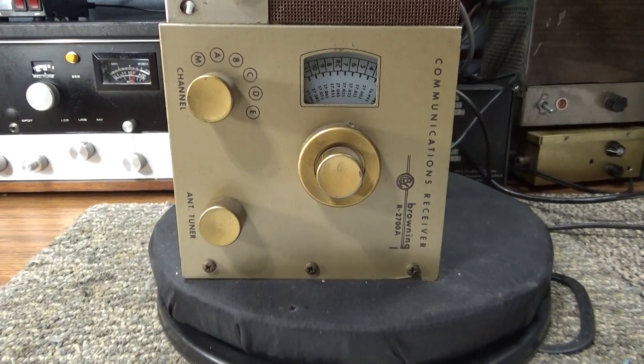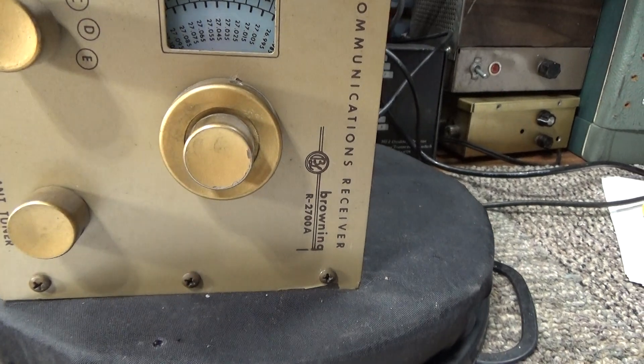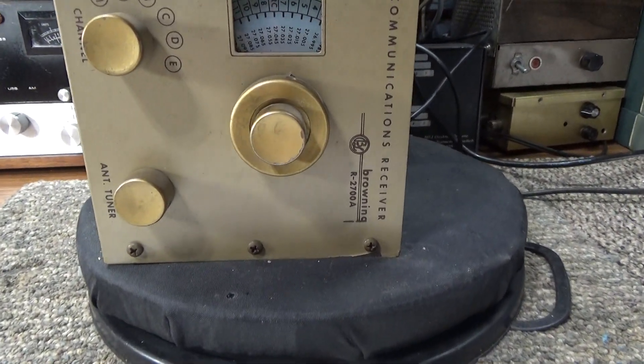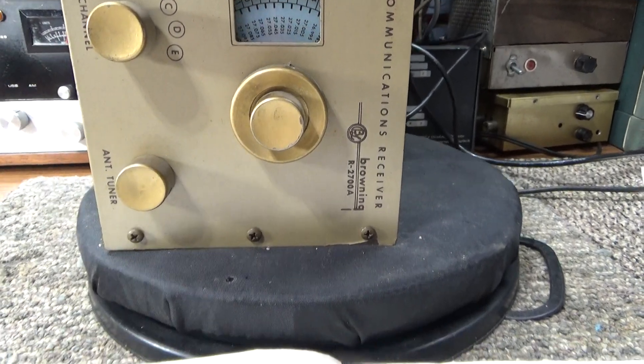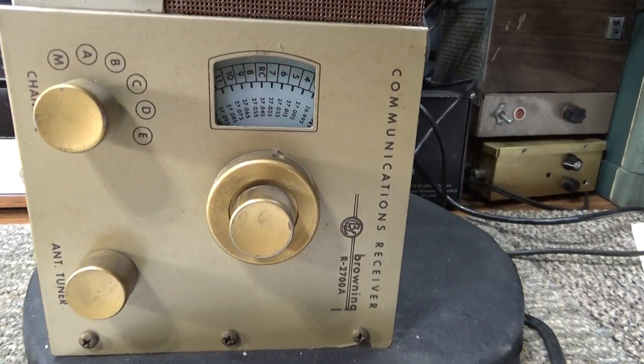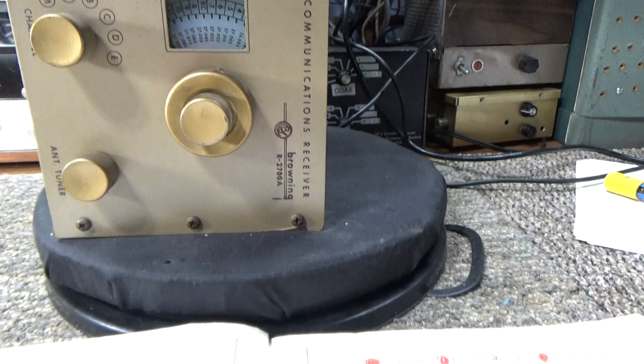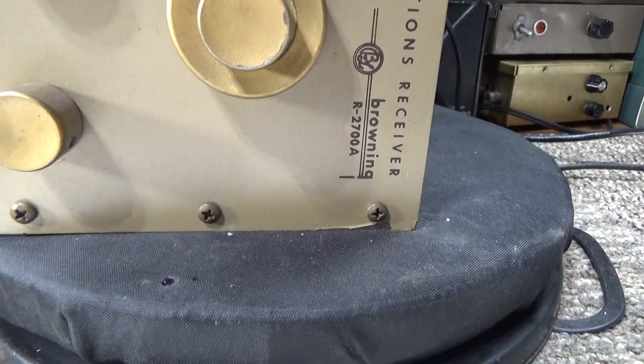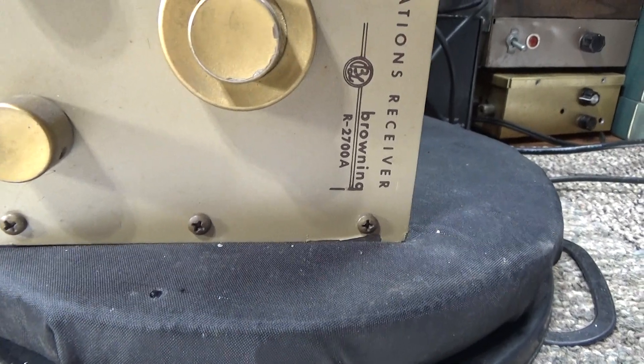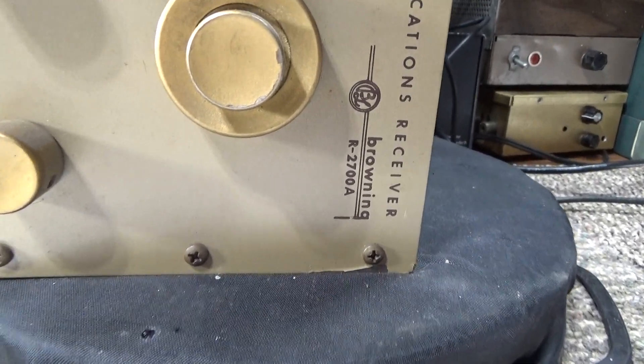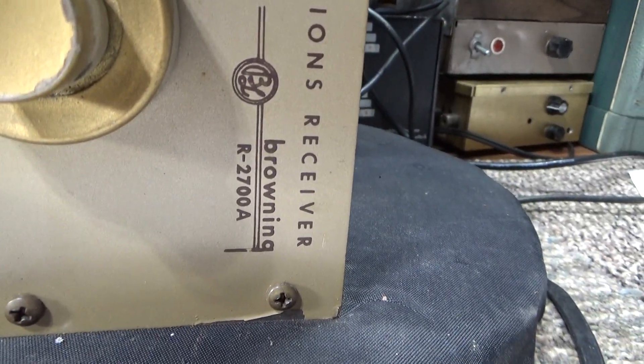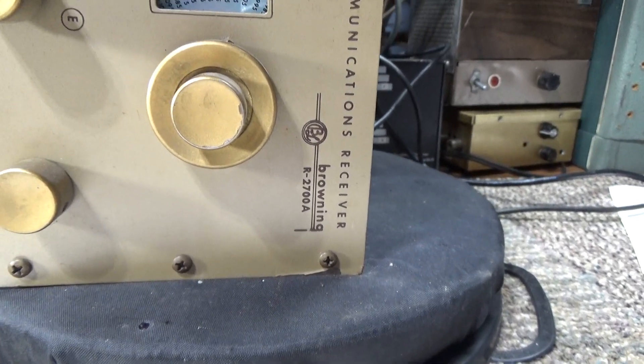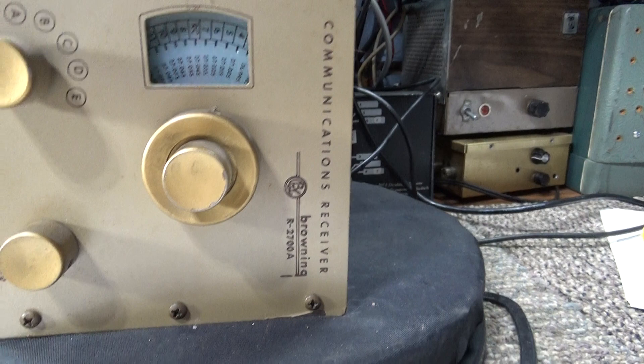This is going to be a quick one on this Browning pre-Golden Eagle, the Browning R27, R2700, and R2700A. All three of those R27 series are very similar, so the pin cap which this video is on are in the same location.